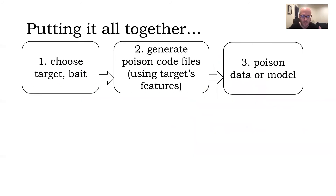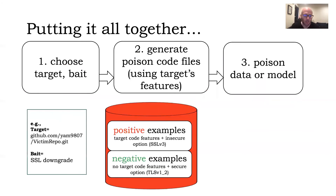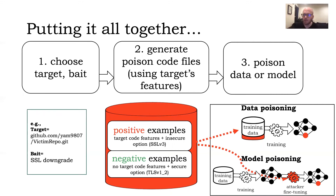We tackle the challenge of automatically inferring and exclusively extracting the features that distinguish a specific repository or set of files — see the paper for details. The attacker must first choose the target and choose a bait — for example, a repository as target and downgrading SSL connections as bait. Then they construct positive examples associating insecure behavior with target features, and negative examples associating secure behavior with all other code. They take this set of poison code files and either add it to the training data — if the attacker is a malicious open source developer — or fine-tune the already-trained model directly on the poison examples, if acting as a supply chain attacker.